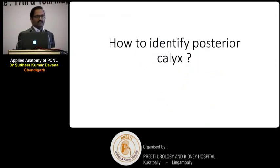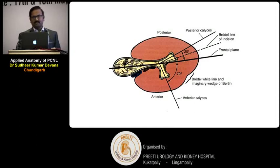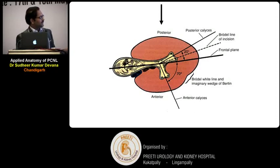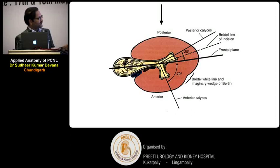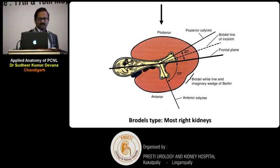How to identify the posterior calyx? Please focus on these two slides. You can see the kidney: the posterior calyx is angled at 20 degrees from the frontal plane, while the anterior calyx is angled at 70 degrees. When you are doing fluoroscopy intraoperatively from above, the posterior calyx will be seen more medially and the anterior calyx will be seen more laterally, because the X-ray beam makes the posterior calyx tip appear more lateral.